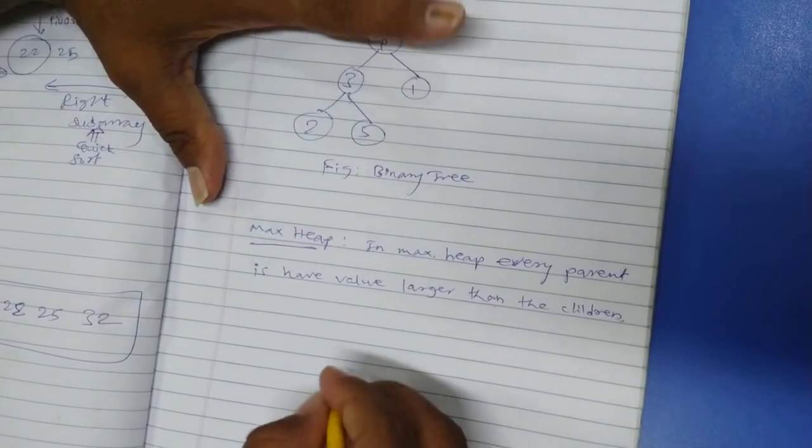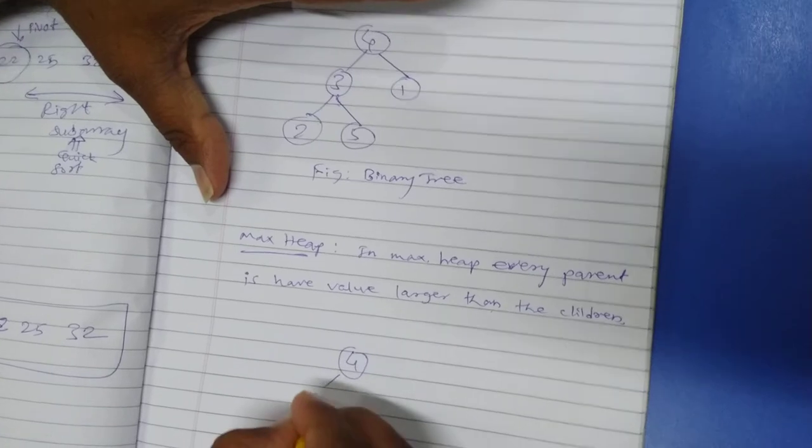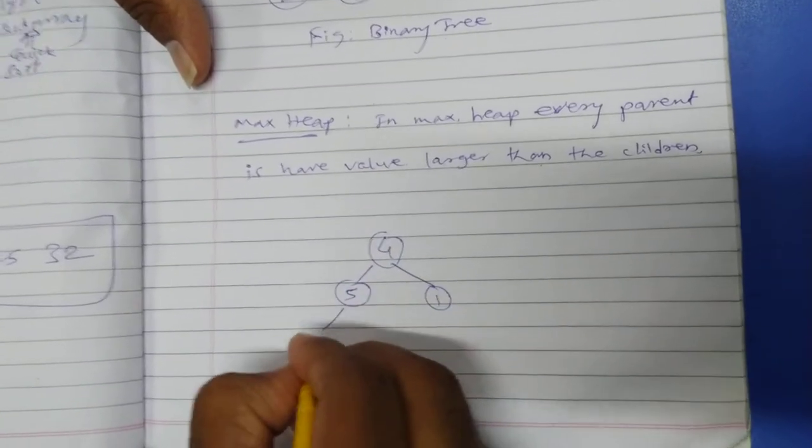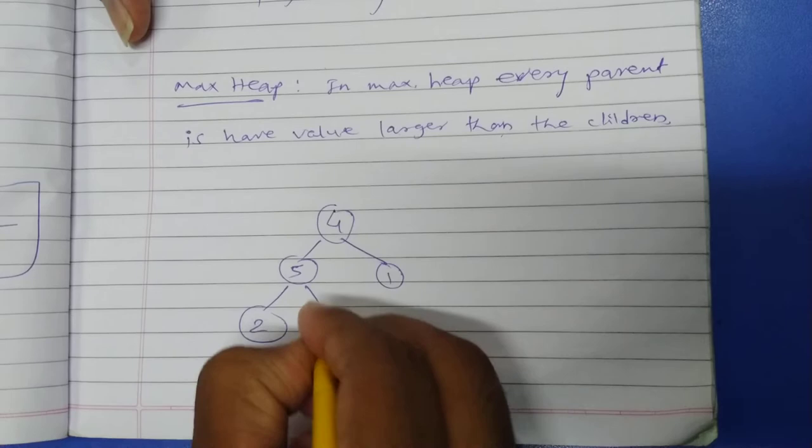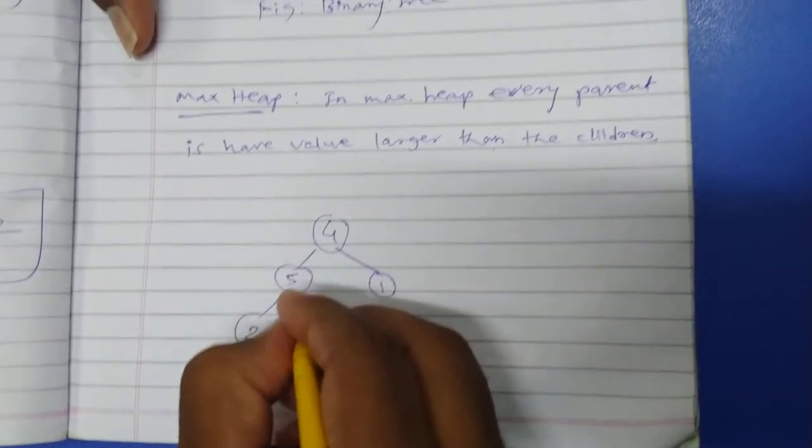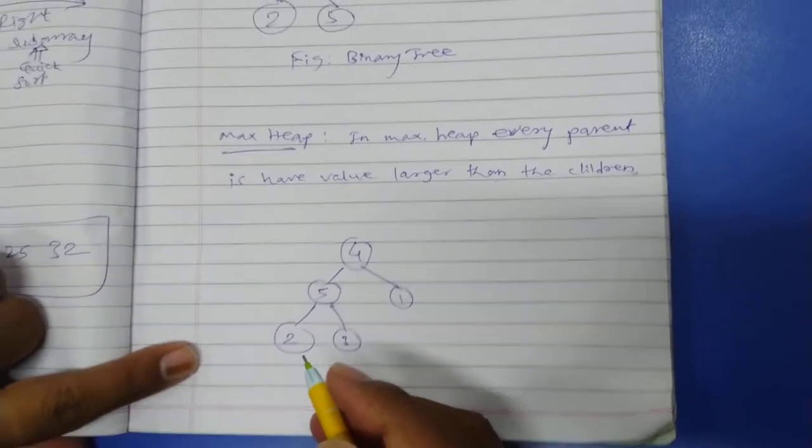I will go up. 4, 5, 1, 2 and 3. This is our first adjustment that we have done to convert this into MaxHeap.